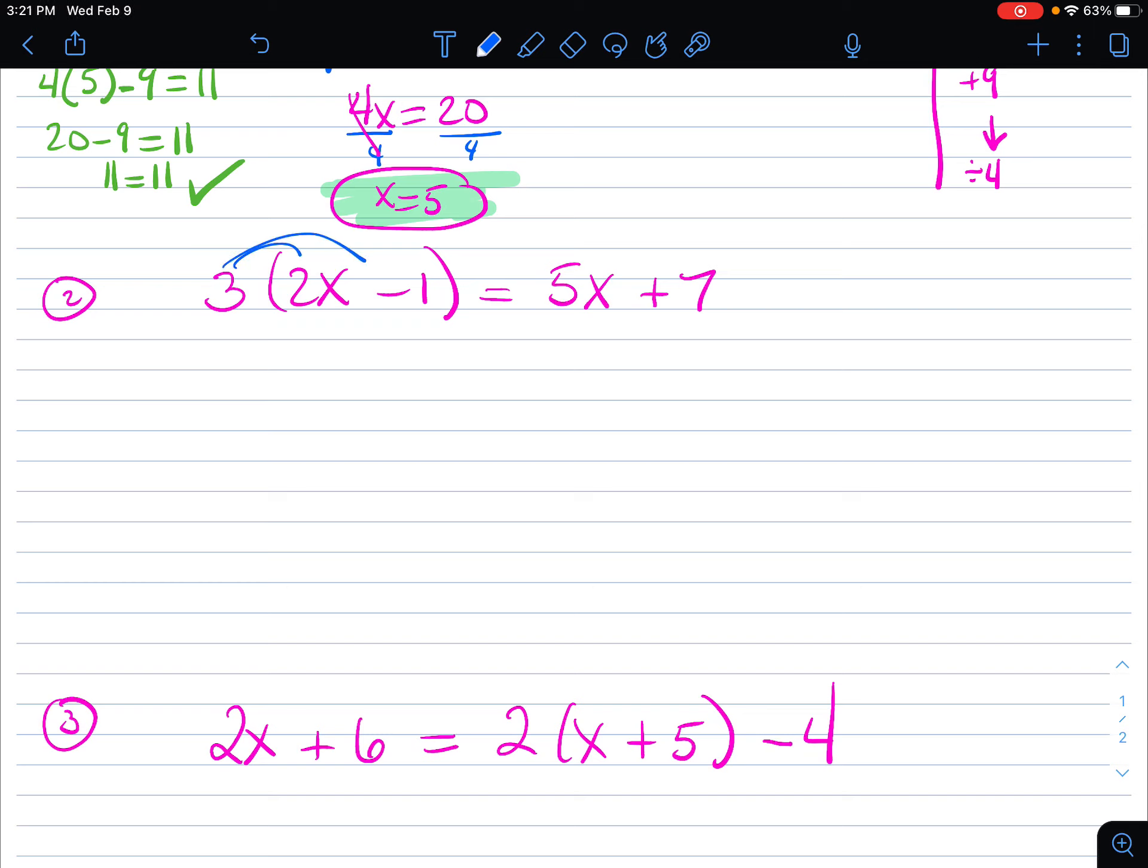So this often involves distributive property and combining like terms. So right off the bat, I see that distributive property. So this is 6x minus 3 equals 5x plus 7. From here, again, I want to get all the x's collected to one side before we do the do and undo.